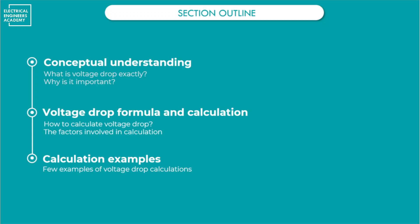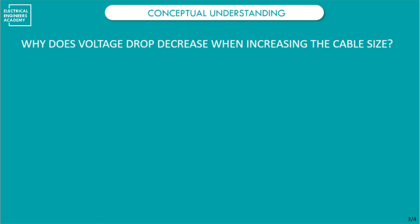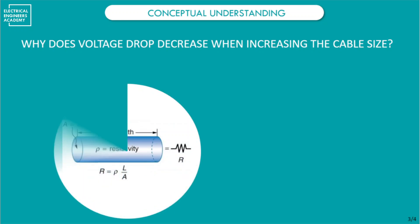What is voltage drop? The formal explanation: voltage drop is the decrease of electrical potential along the path of a current flowing in an electrical circuit. But what does this mean exactly, and why does voltage drop decrease when increasing the cable size?